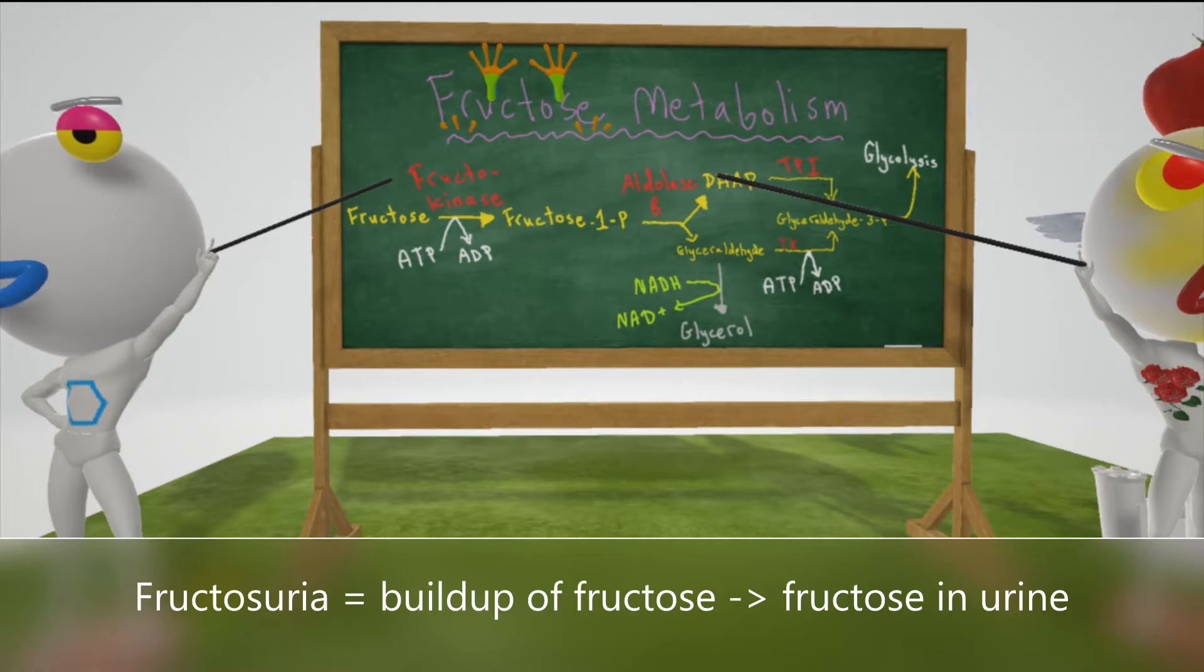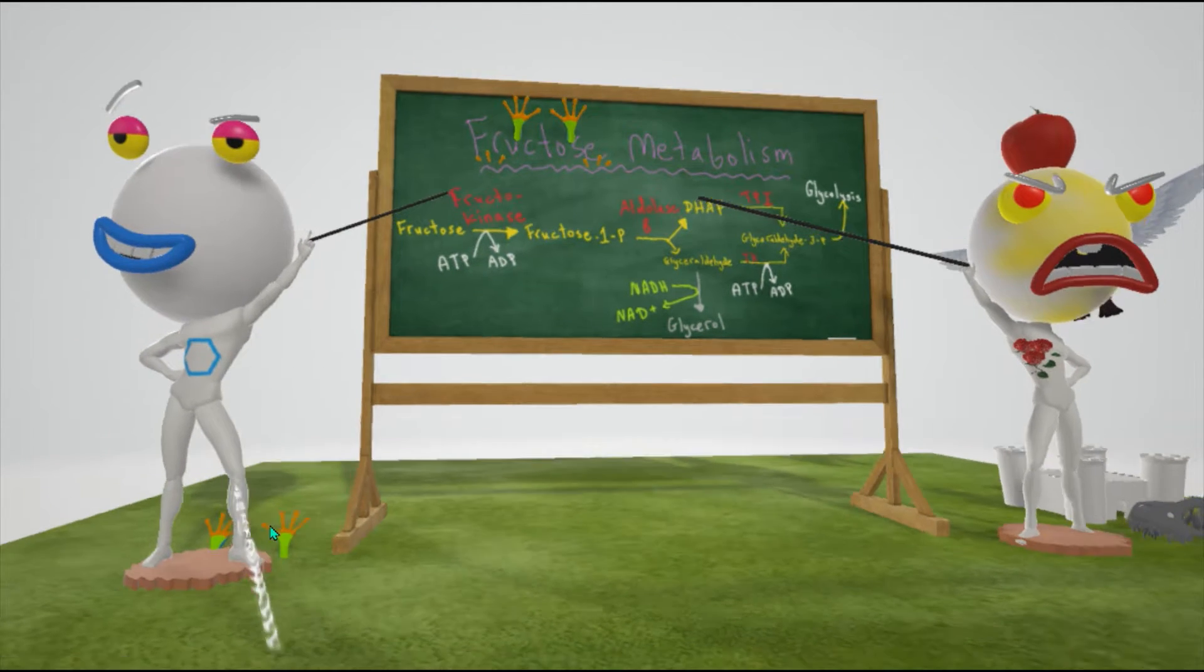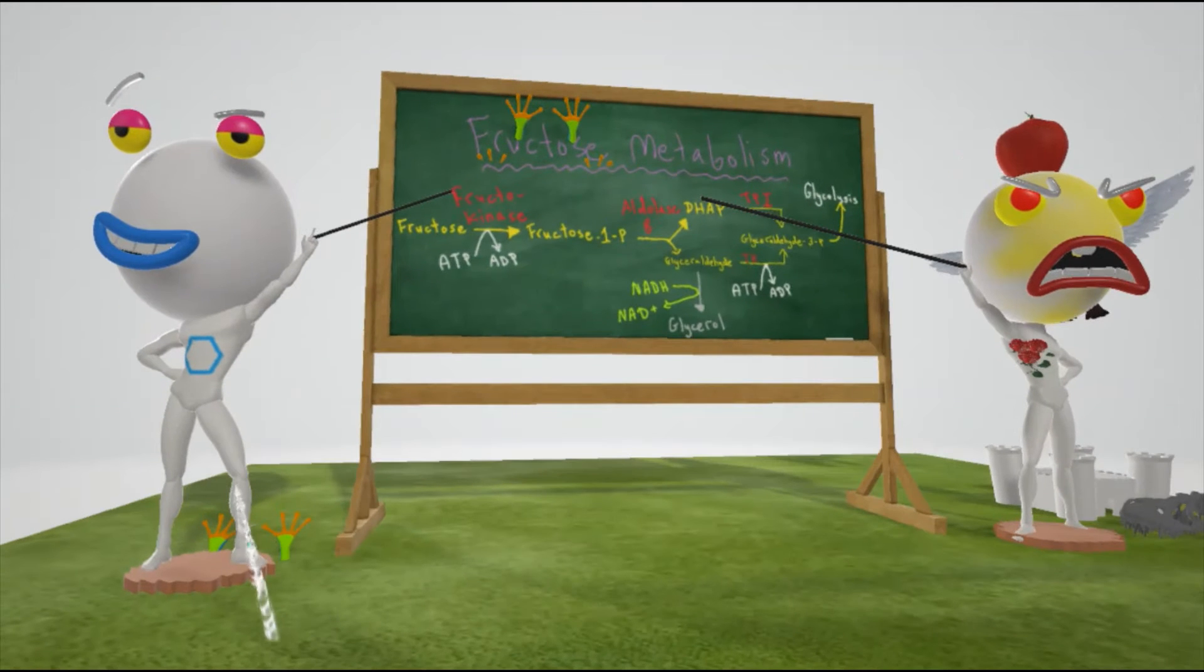Fructose ends up in the urine, and that's why this teacher has his frog toes. Take a look over here. There's a frog by the urine to help us remember fructose in the urine.